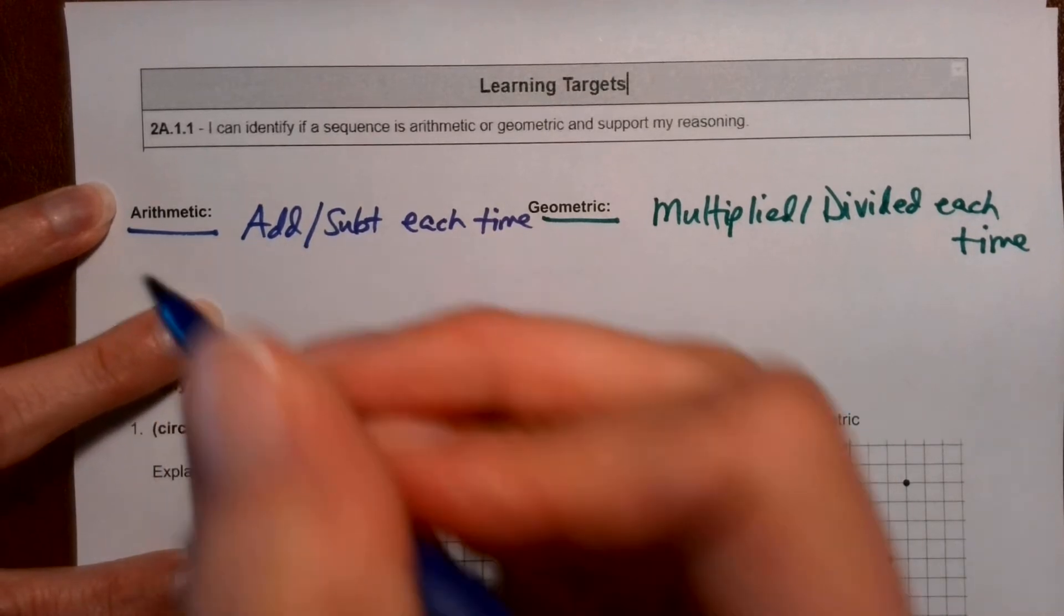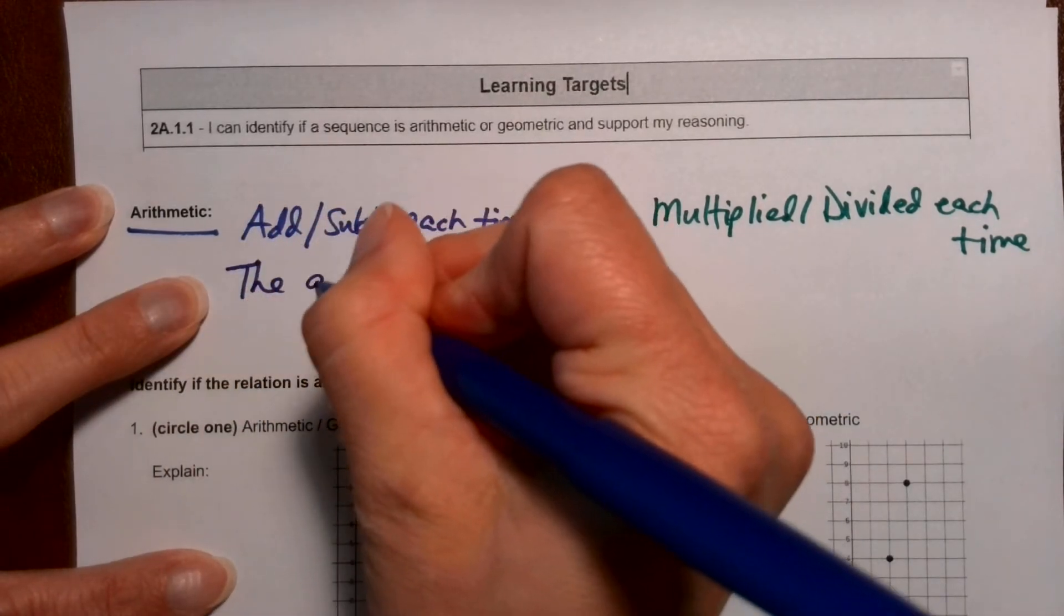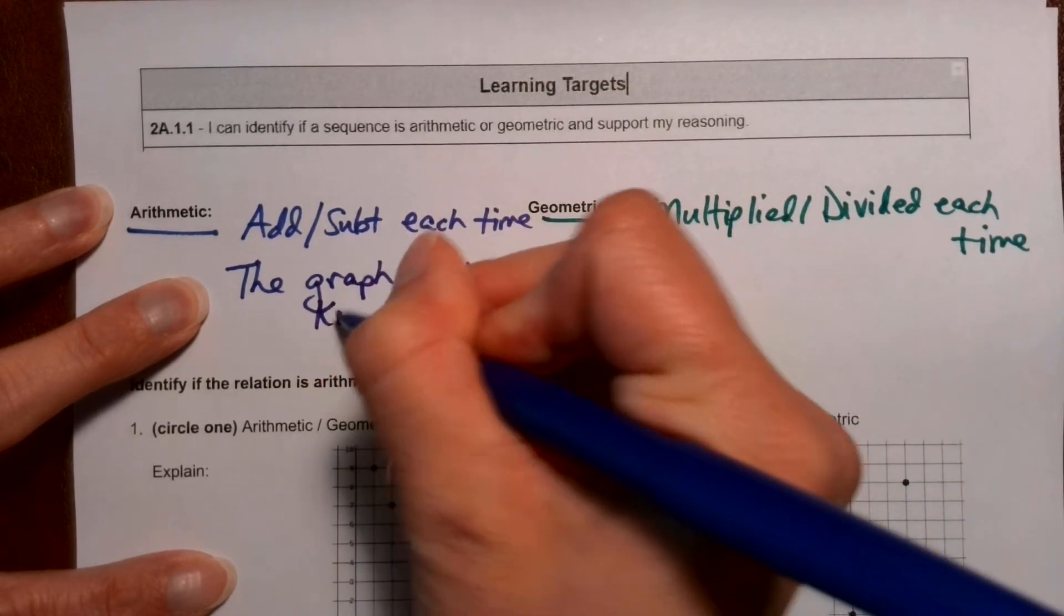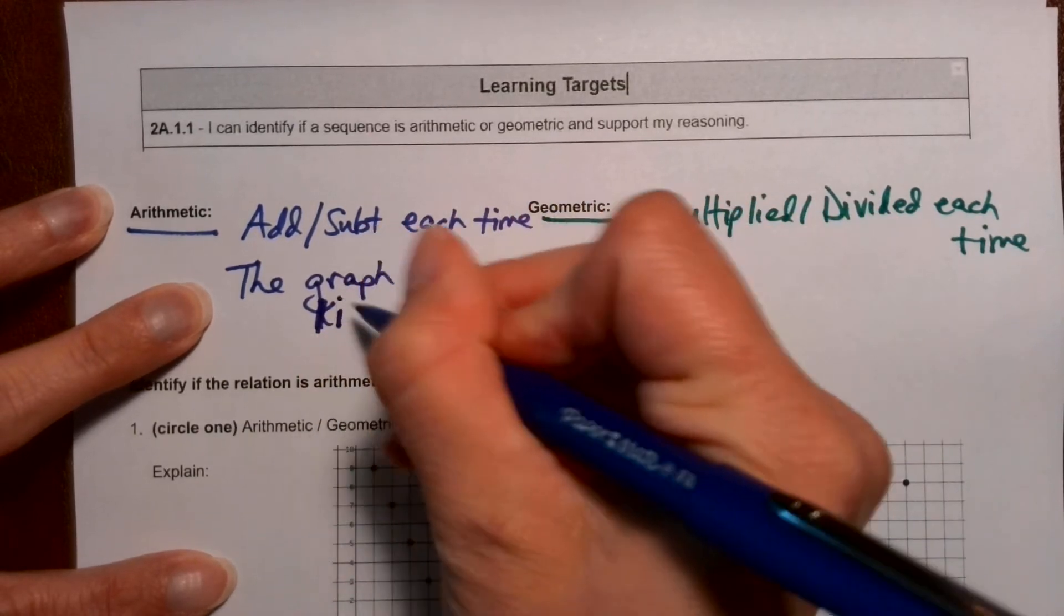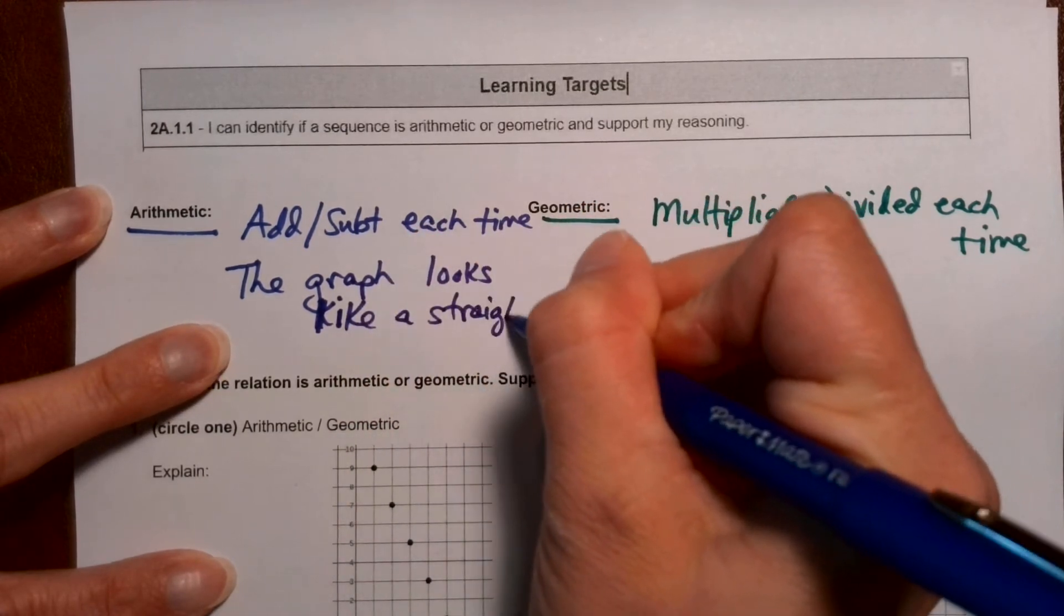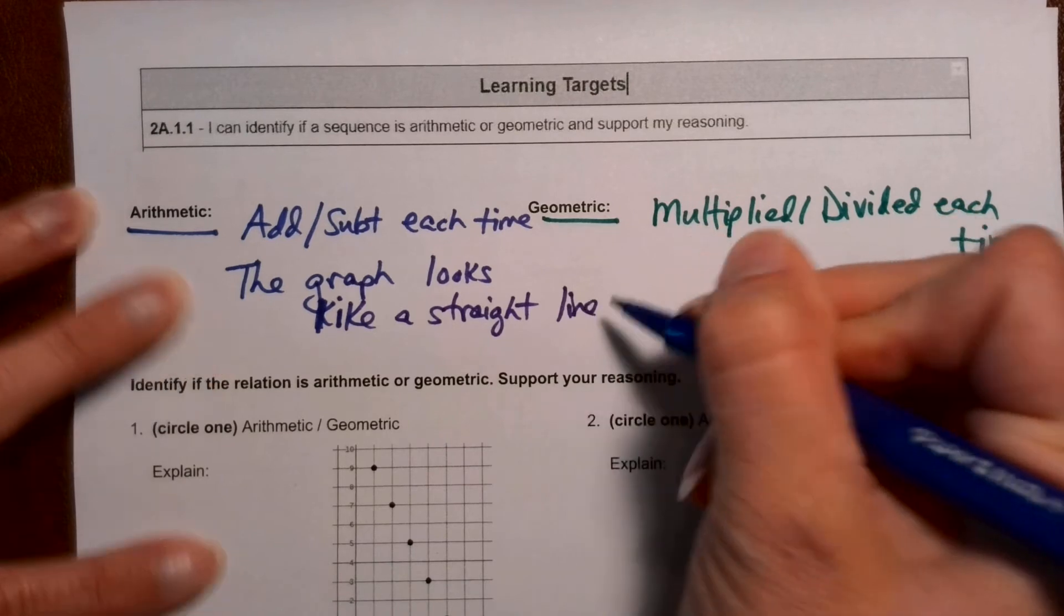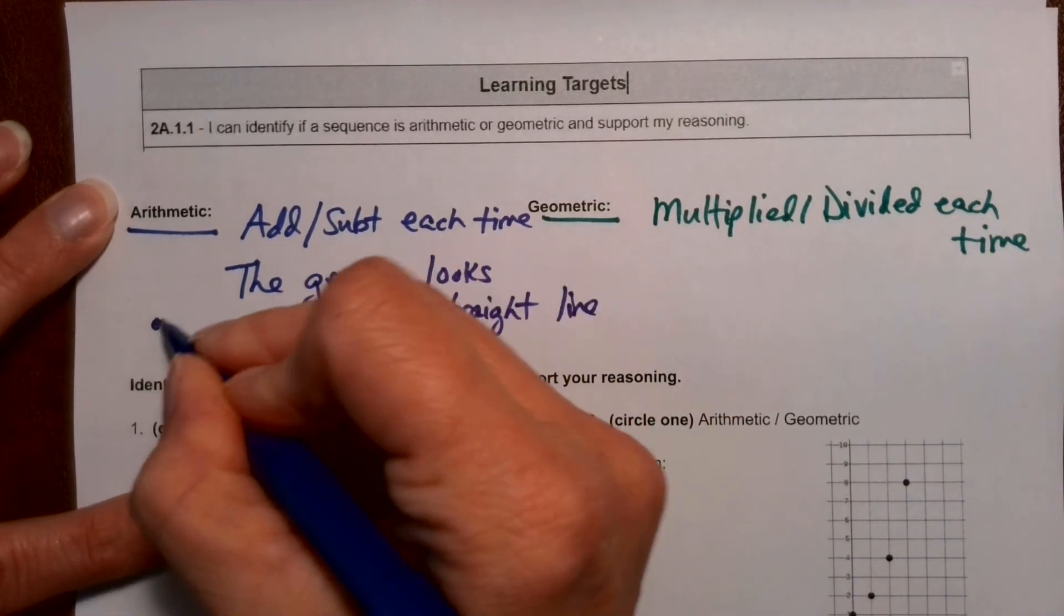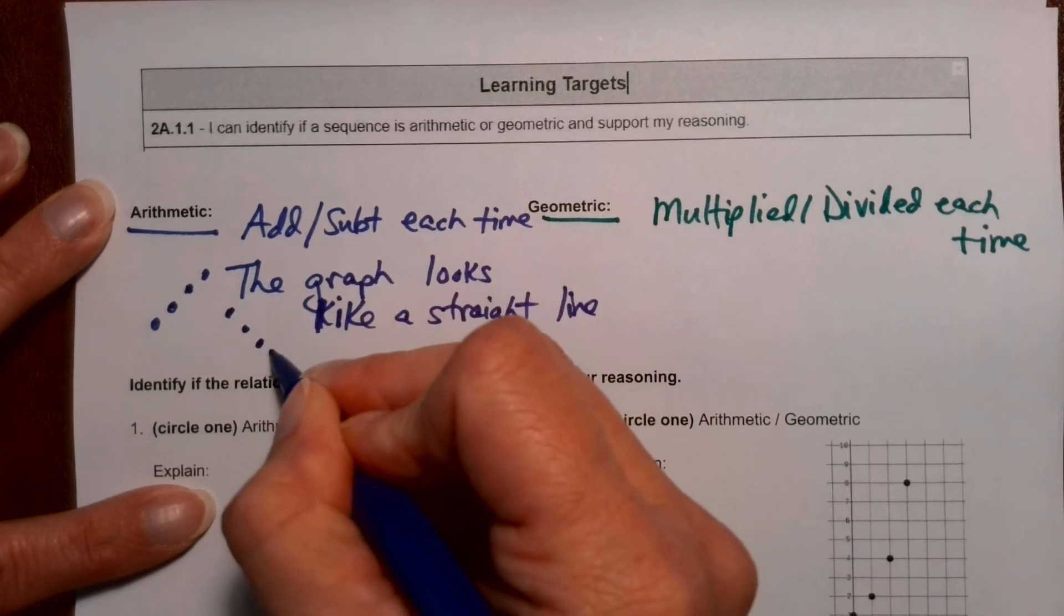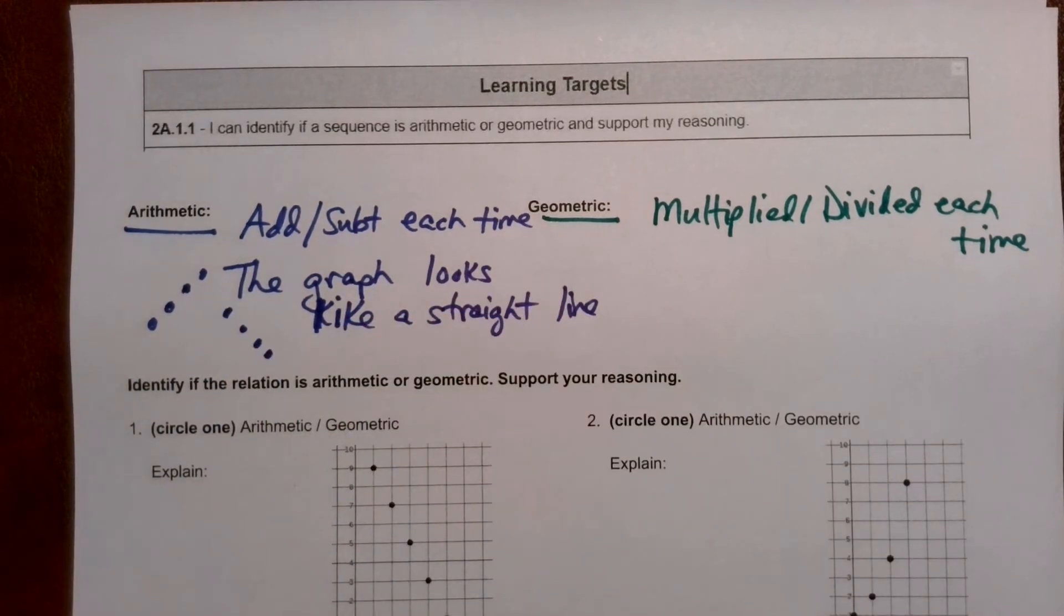So if you're arithmetic, the graph looks like a straight line. It looks like a straight line. So if you're arithmetic, your points are going to be going up, up, up, or down, down, down, uphill or downhill.